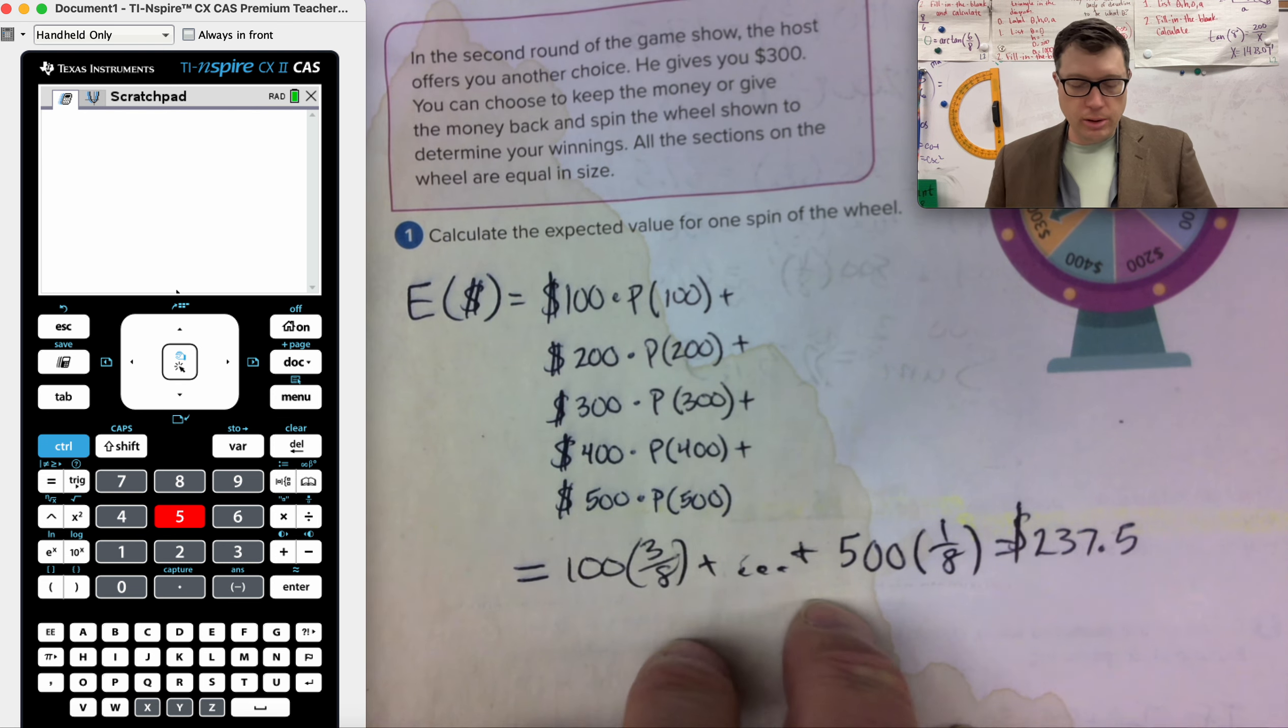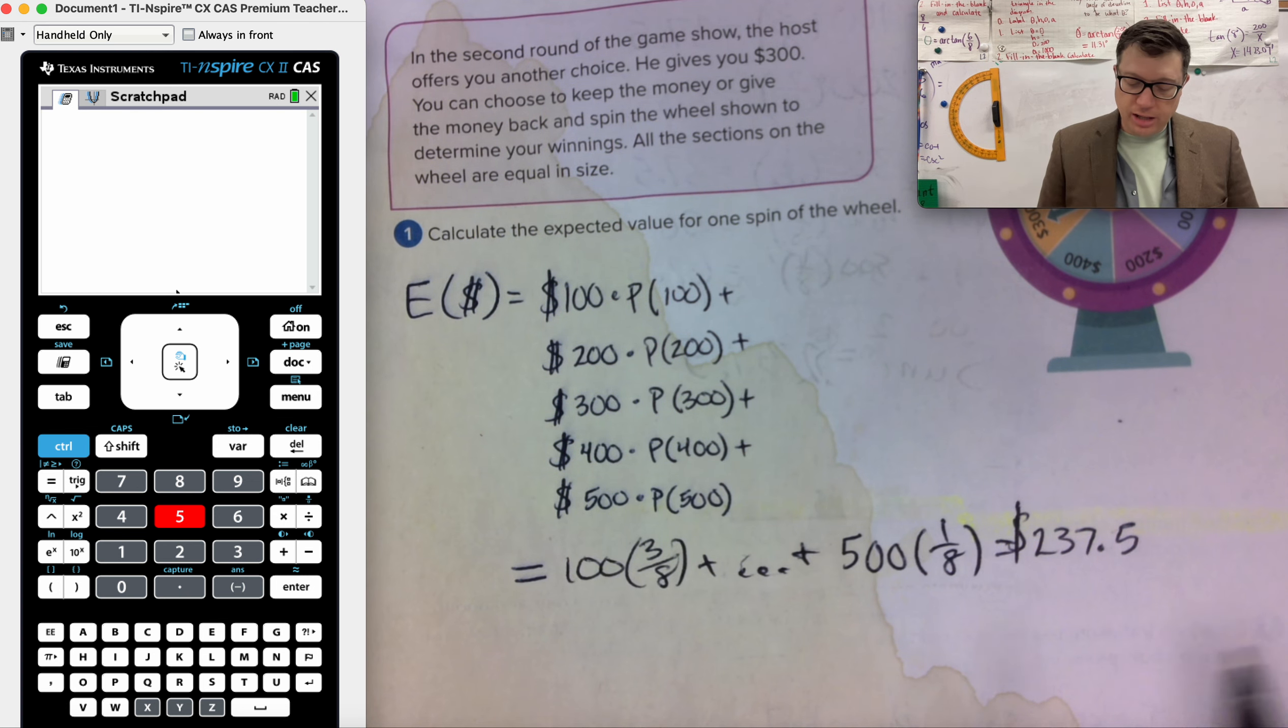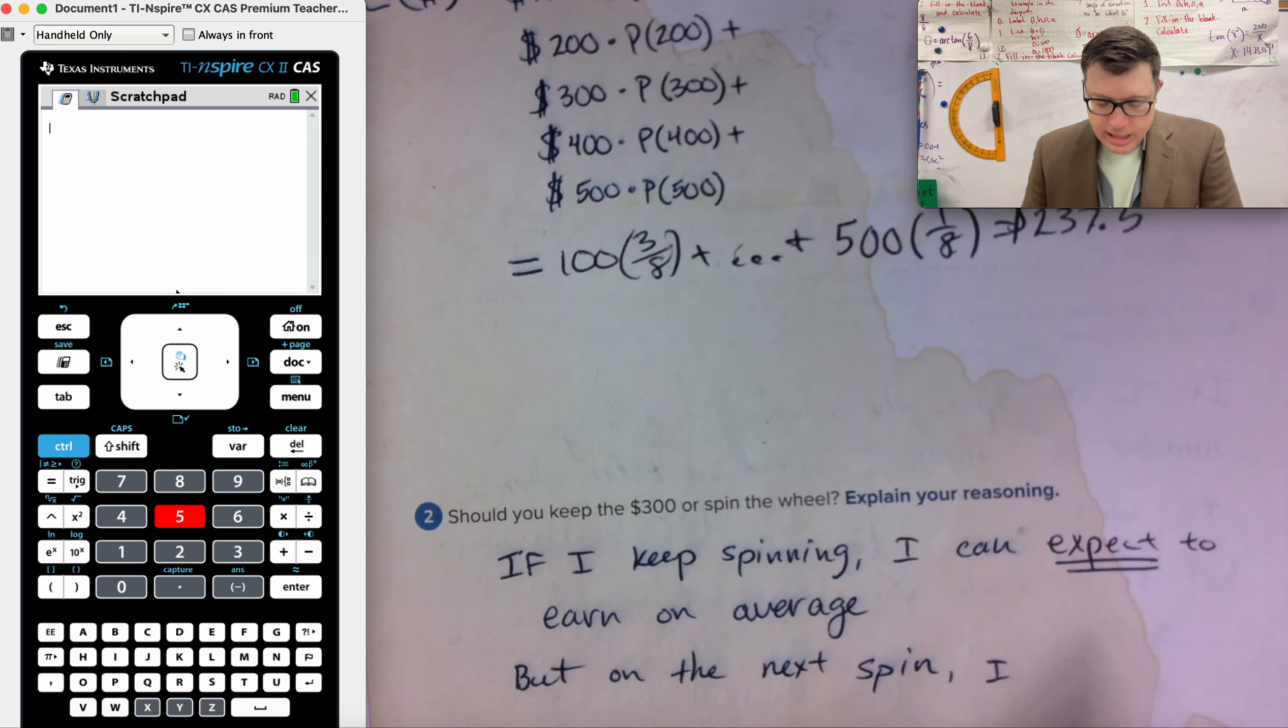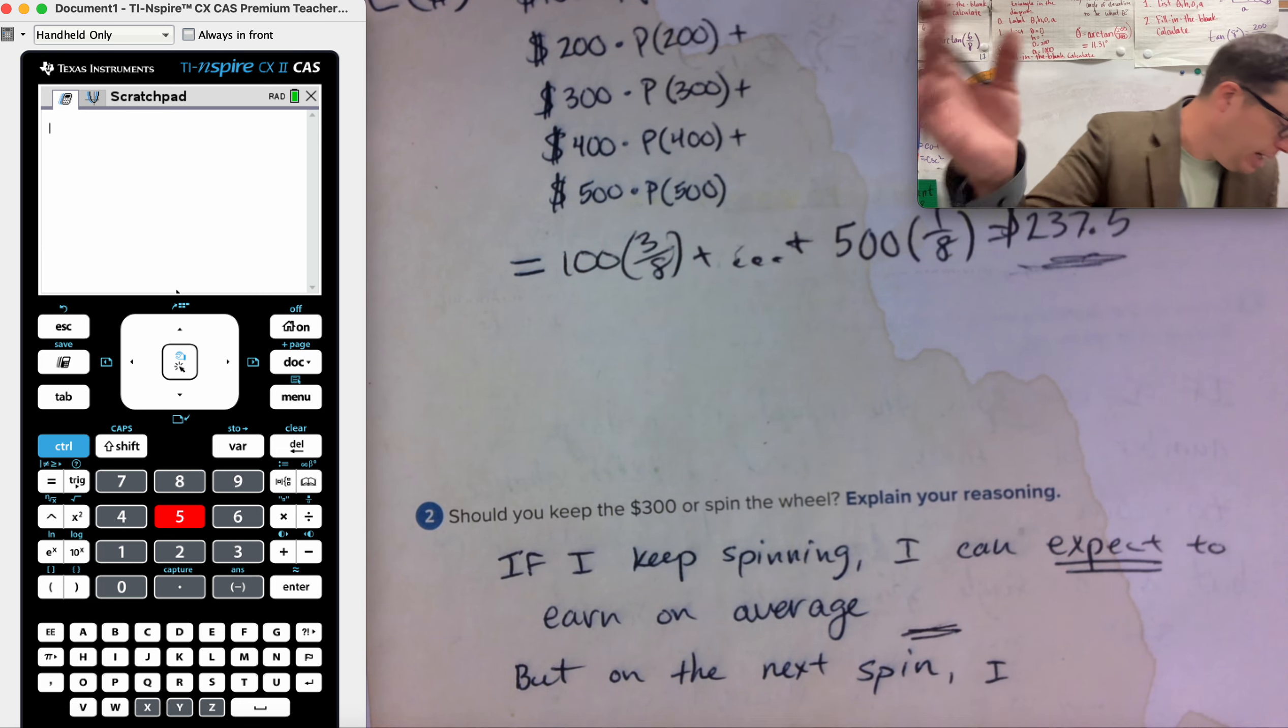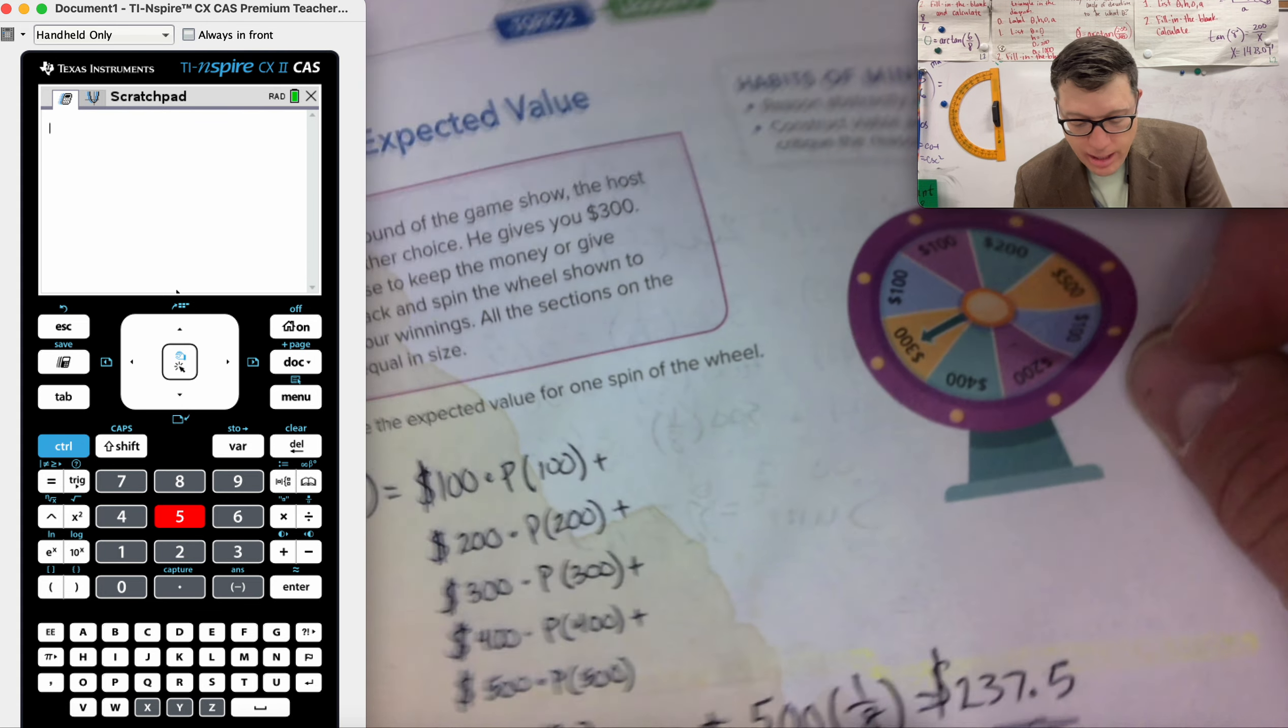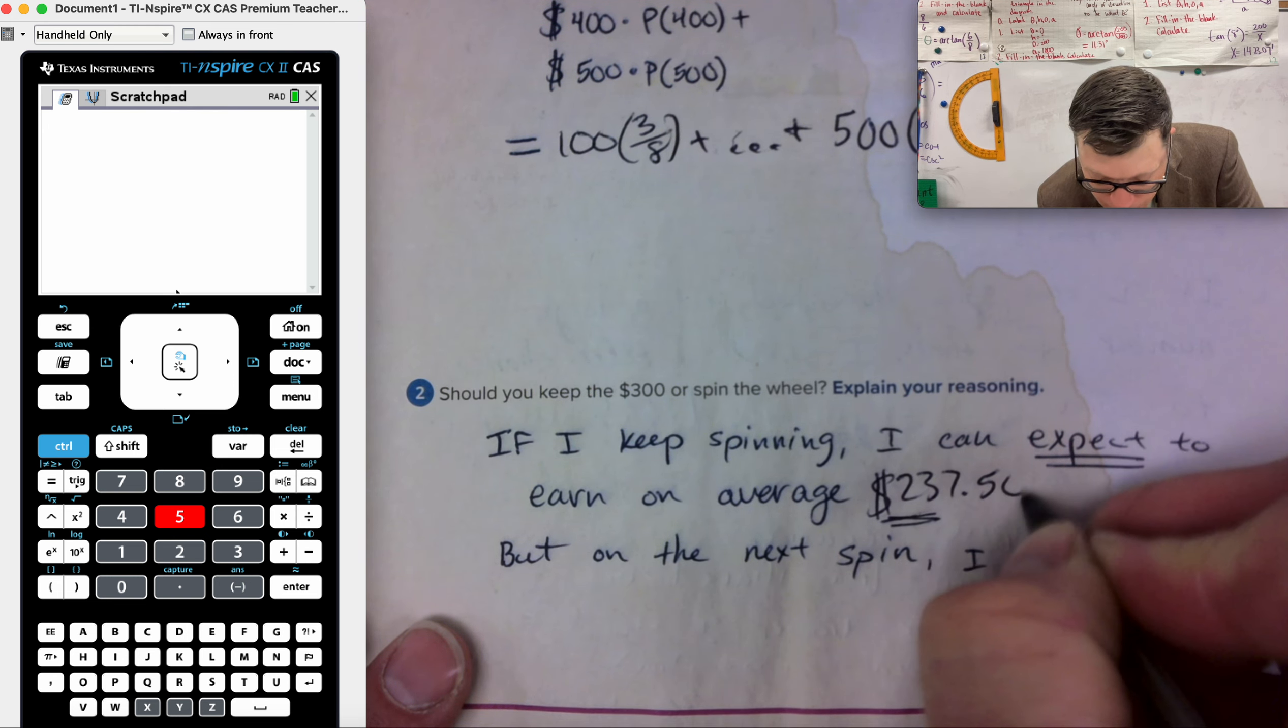And because of, you know, in the answer key for that question, it has a different probability, same number of outcomes, but going up to 700 in value, the expected value is going to change. Still, if I keep on spinning the wheel, I can expect to earn on average, whatever that expected amount was. Answer key, they say is $362.50. But my answer, because at this moment, the paper copy of the print materials has the same wheel as the last one. It's still $237.50.